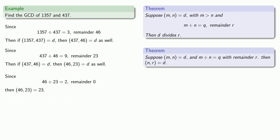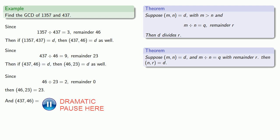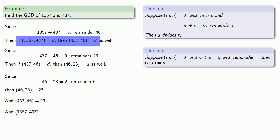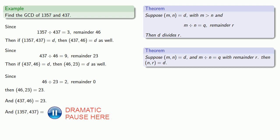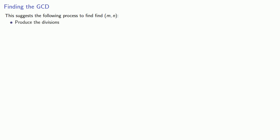And that means the greatest common divisor of 437 and 46 is 23. And so the greatest common divisor of 1357 and 437 is also 23. This suggests the following process to find the greatest common divisor of two numbers.